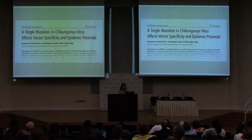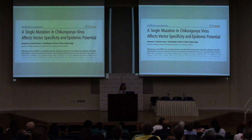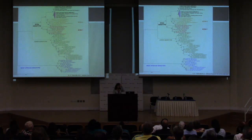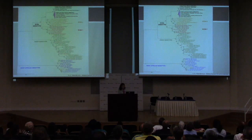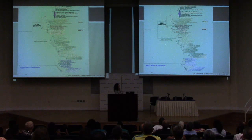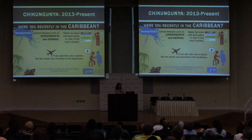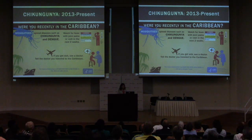A single mutation allowed the virus to transmit so easily in the very common Aedes albopictus mosquito, which is present in many places in the world. Chikungunya has three genotypes: the East/Central/South African genotype, the Asian genotype, and the West African genotype. The outbreak down the coast of Kenya and on the Indian Ocean islands involved the East/Central/South African genotype — remember that, as it becomes relevant later.